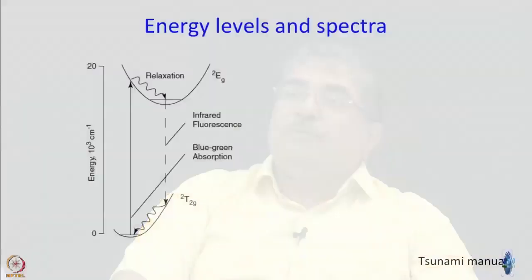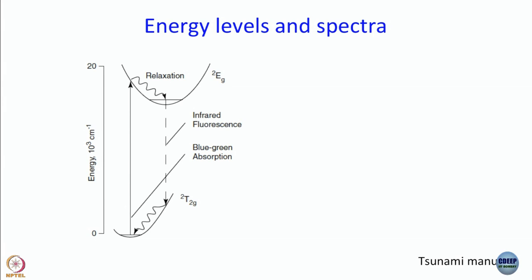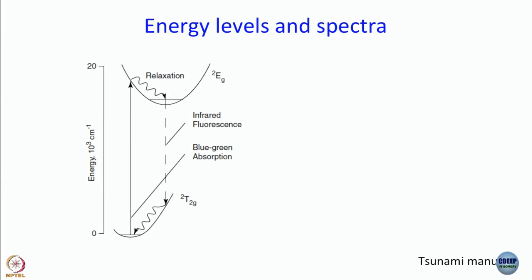The laser we use in our laboratory is a titanium sapphire laser. To a layman, sapphire is a precious stone. To a chemist, sapphire is aluminum oxide with some doping — here the doping is titanium. The material is made by melting titanium oxide and aluminum oxide together at a particular doping level. Aluminum oxide is the matrix; the titanium ion is the actual active ingredient.